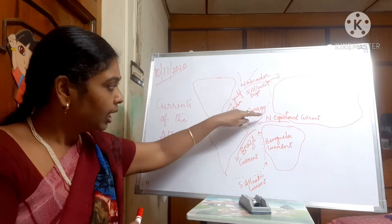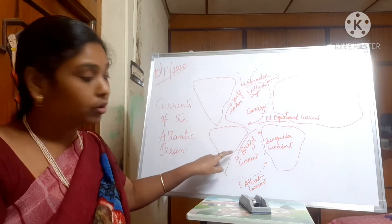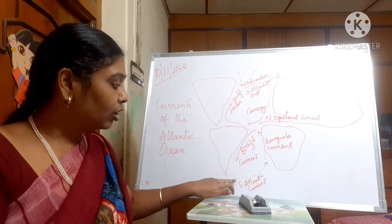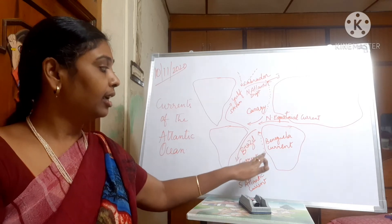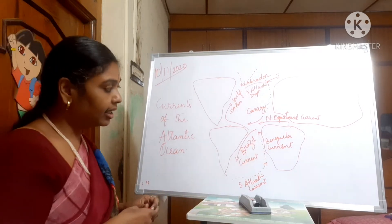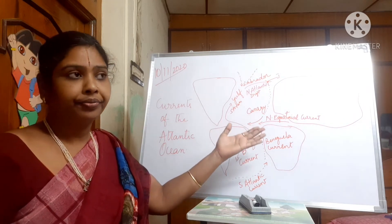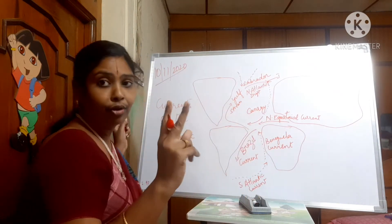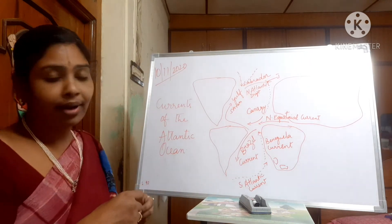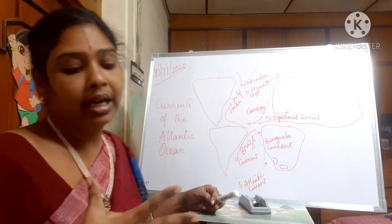The North Equatorial current comes down to South America as the Brazil current. From the South Atlantic and Antarctic Ocean, a cold current comes towards Africa as the Benguela current. This Benguela current is a positive current — on the south of Africa we have two deserts: the Kalahari desert and the Namib desert. The Benguela current lessens the temperature of these deserts and gives them moisture.